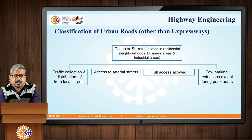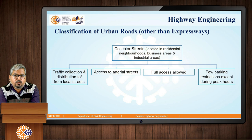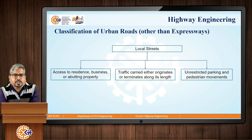Collector streets are located in residential, business, and industrial areas. Their main aim is to collect traffic and distribute it to or from local streets. They provide access to arterial streets and full access is allowed, unlike in arterial and sub-arterial roads. Few parking restrictions apply, except during peak hours.